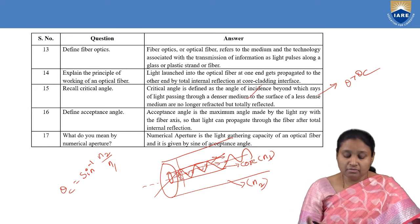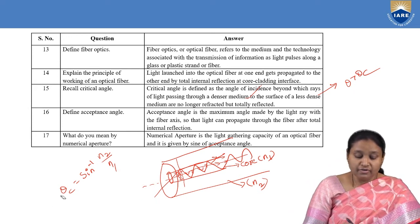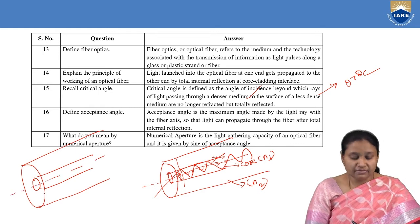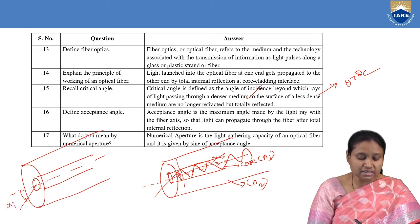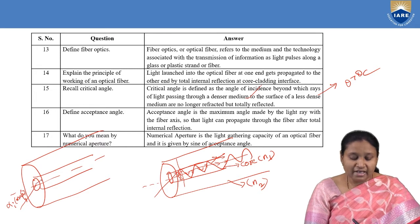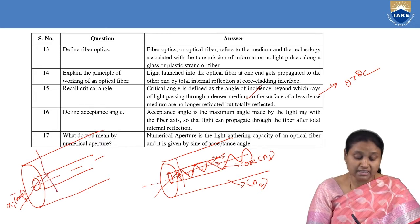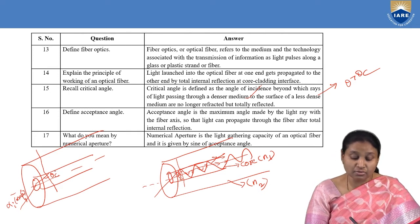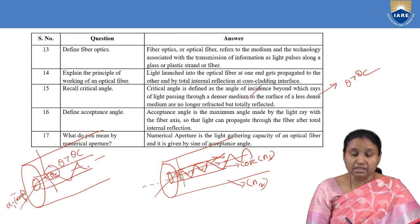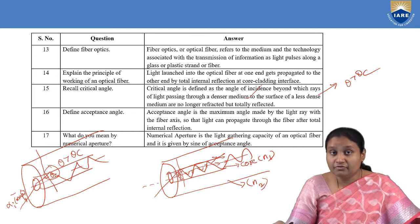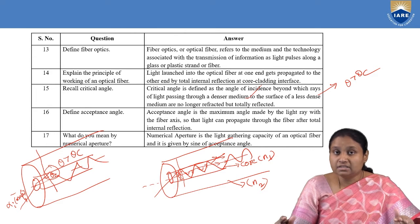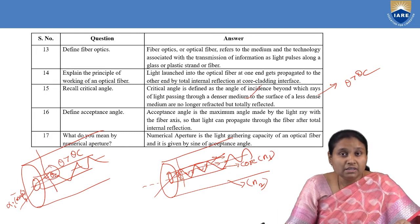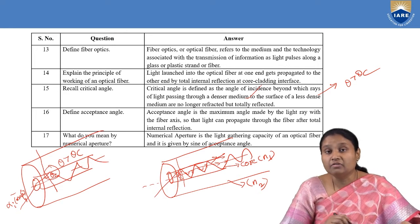What is acceptance angle? When we launch light inside the core, there is a maximum angle of incidence — called alpha-i-maximum — for which the light ray enters the core and strikes the core-cladding interface at the critical angle theta-c. We always launch light at angles less than this maximum angle so that the internal angle is greater than theta-c, ensuring total internal reflection takes place. This maximum angle of incidence is the acceptance angle.